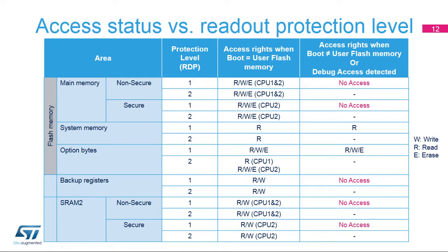The option bytes can be read only when the RDP is set to Level 2. Otherwise, if the device is not configured to boot from the user flash memory, or if a debugger access is detected, then almost all memories are not accessible except the system flash memory, which can only be read in Level 1, and option bytes, which can be read or modified in Level 1.